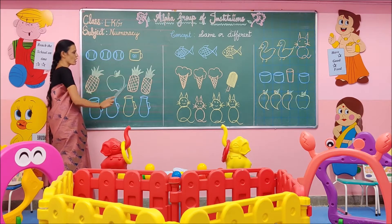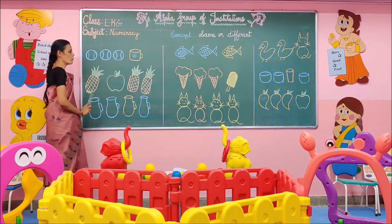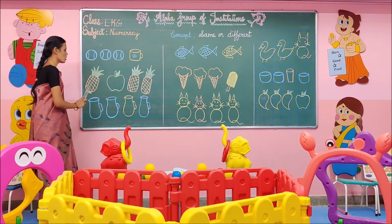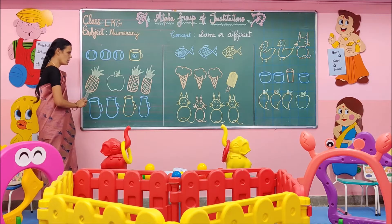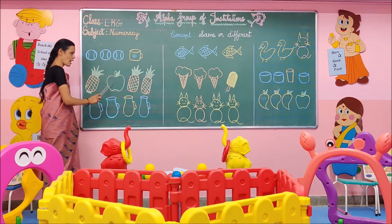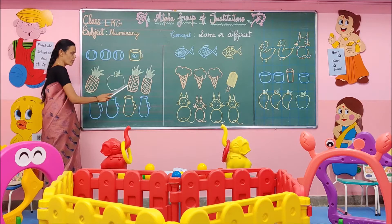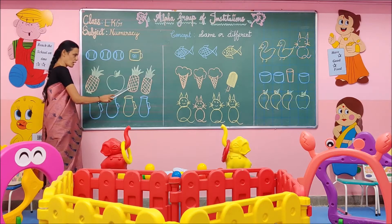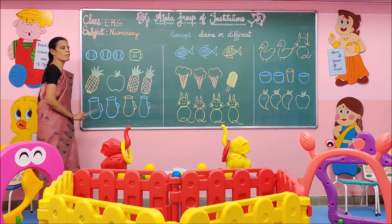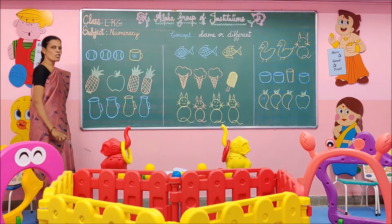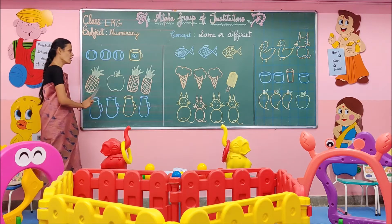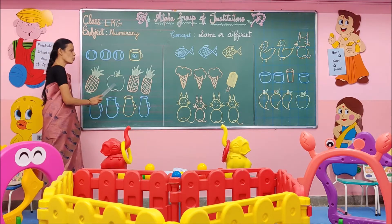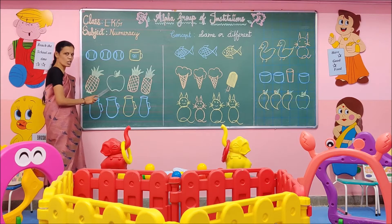Next, here we are having fruits. This is pineapple. This is apple. This one is pineapple. This one is pineapple. Which one is different in this group? Apple is different in this group. Apple does not belong to this group.